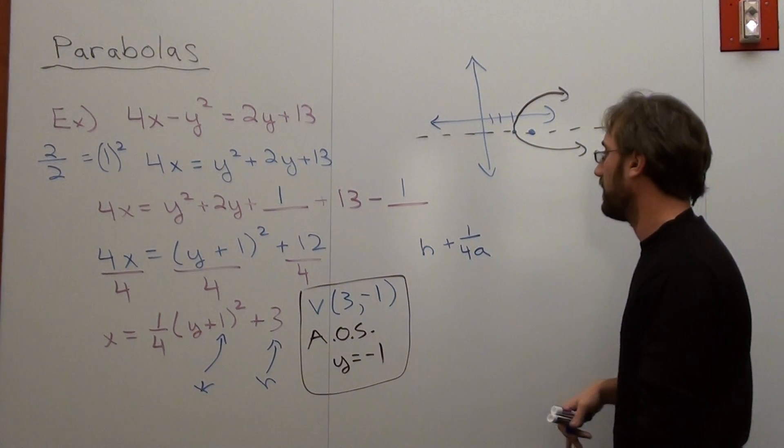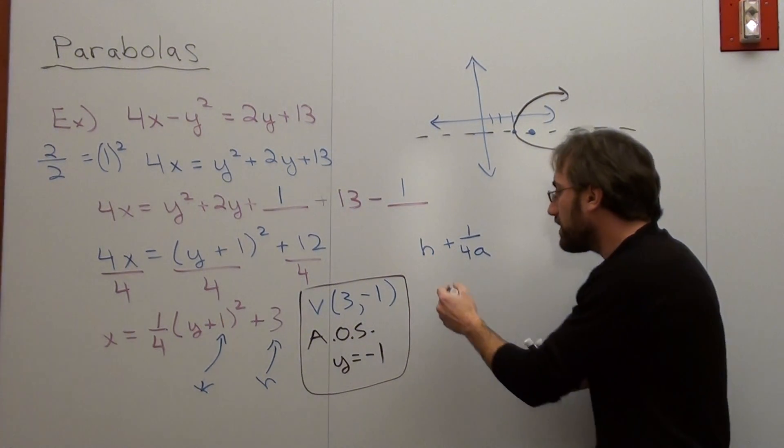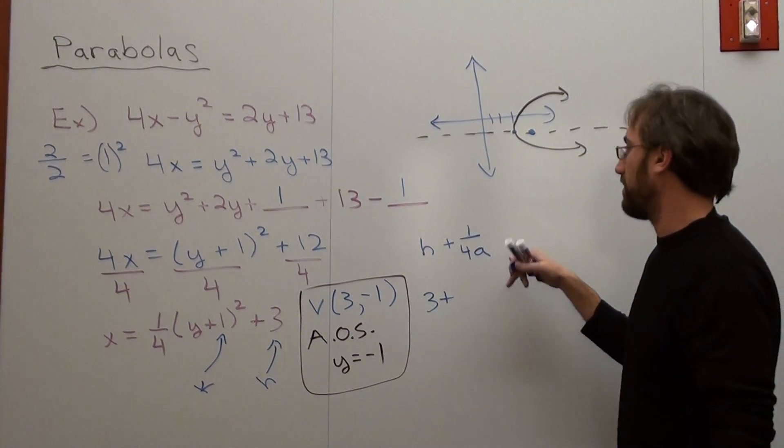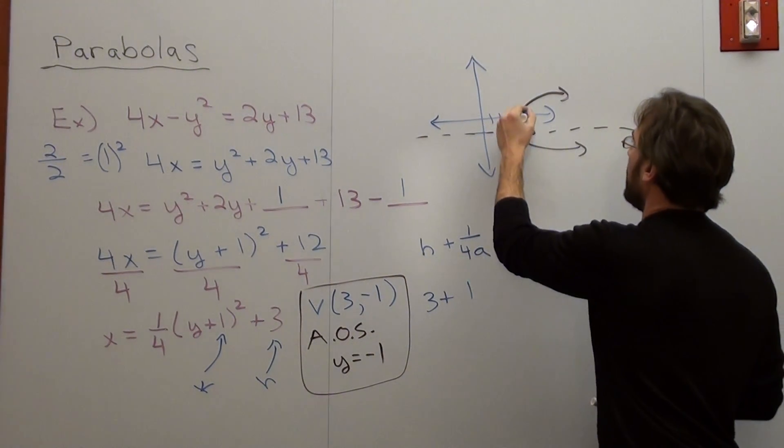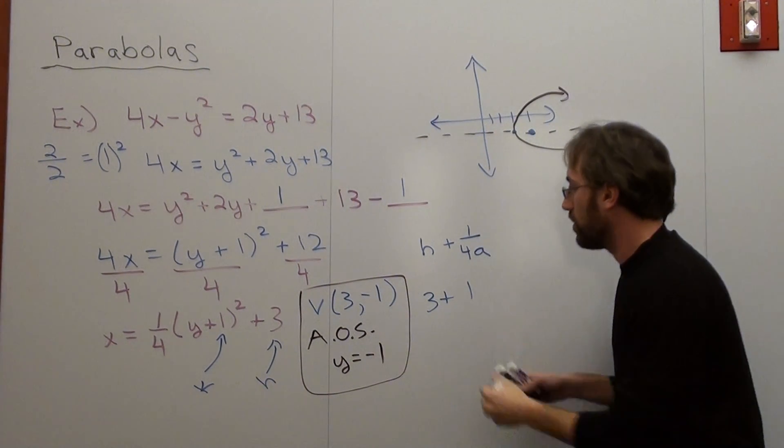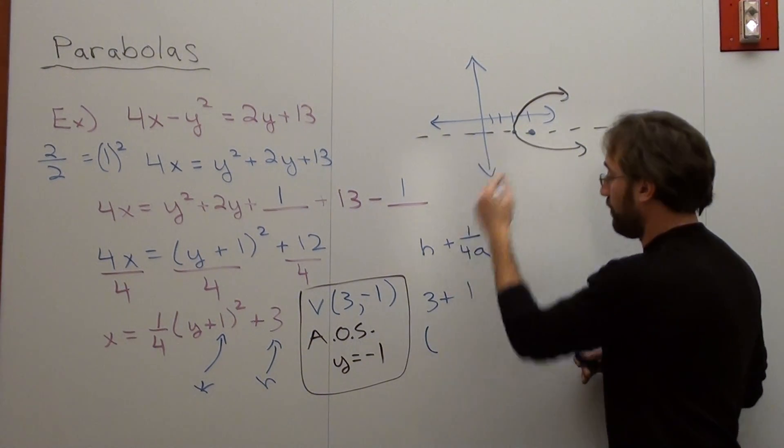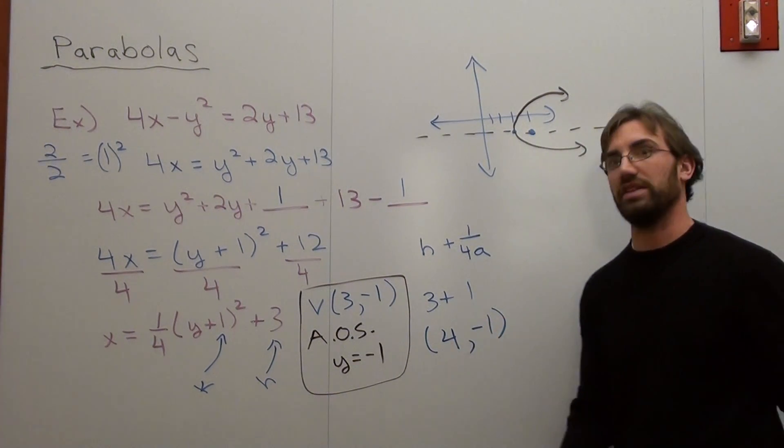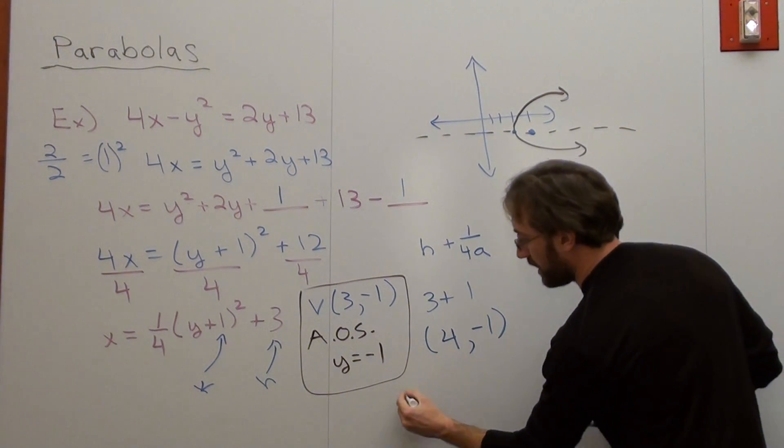My h is 3 plus 1 over 4a. That's 1 divided by a fourth. That's 1. Hey, I actually have a good spot this time. I can actually figure it out. So my focus is at (4, -1). That's actually going to be pretty easy defining this. So this is my focus right here.